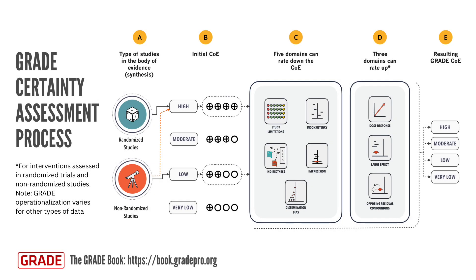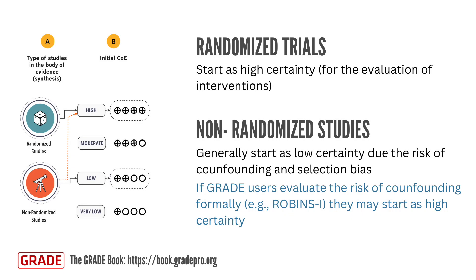We'll now explore how GRADE users can assess the certainty of the evidence for intervention questions. For interventions, the starting point for rating the certainty of evidence is the study design, broadly separated into two types: randomized controlled trials and non-randomized studies about interventions. In GRADE, a body of evidence from randomized trials starts with a high certainty rating, whereas evidence from non-randomized studies generally starts as low certainty due to the risk of confounding and selection bias.